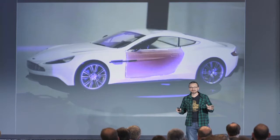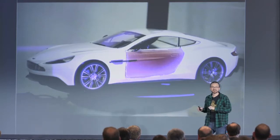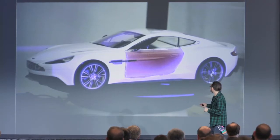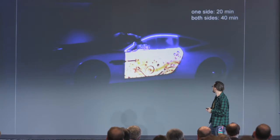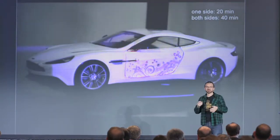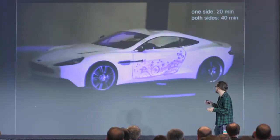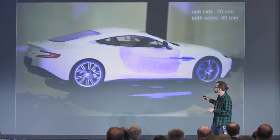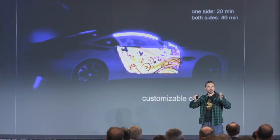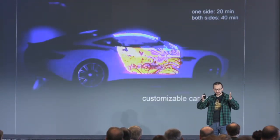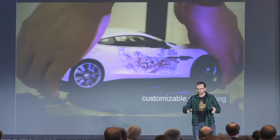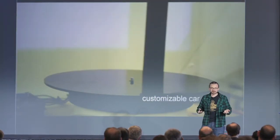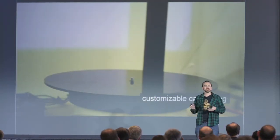This is our famous car model — again, it's not a real car, just a model. To make this 3D, we also implemented a turntable. Pretty much everything is automatic: you just place your object in the device, click Start or Export, and then everything is done automatically.